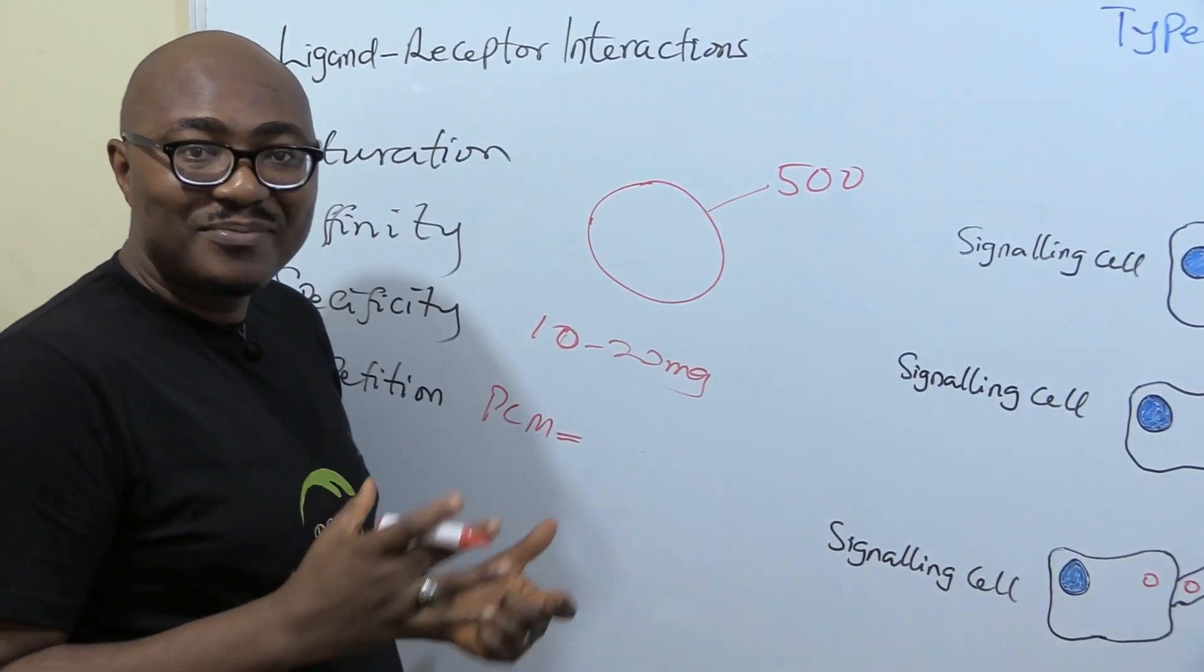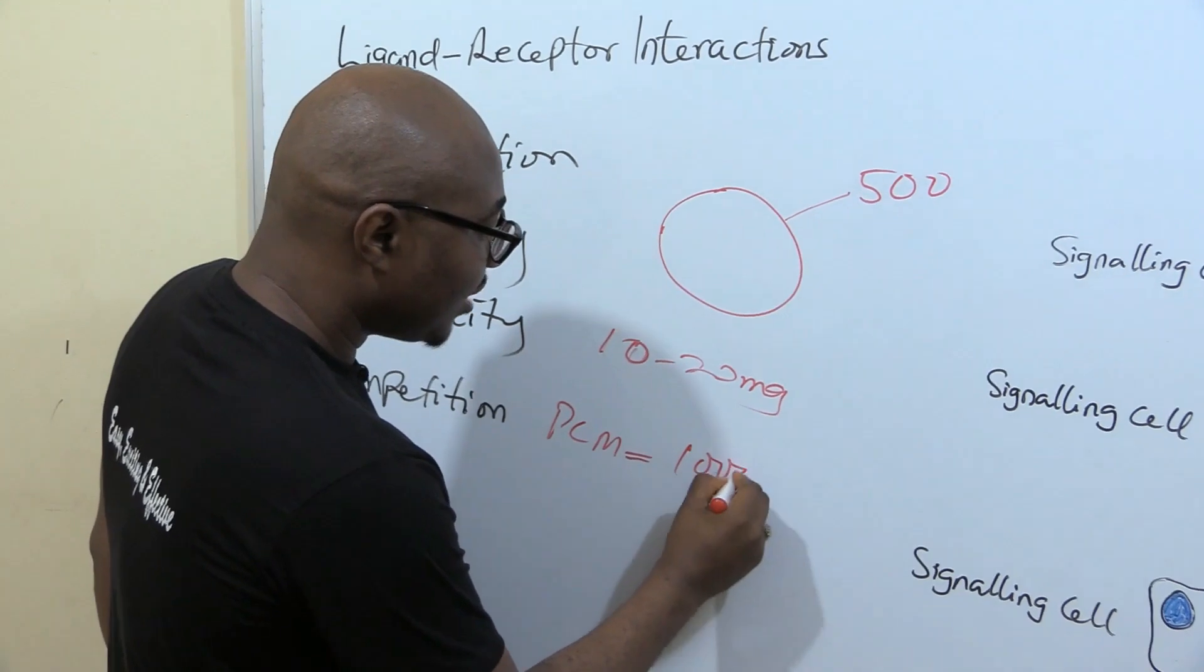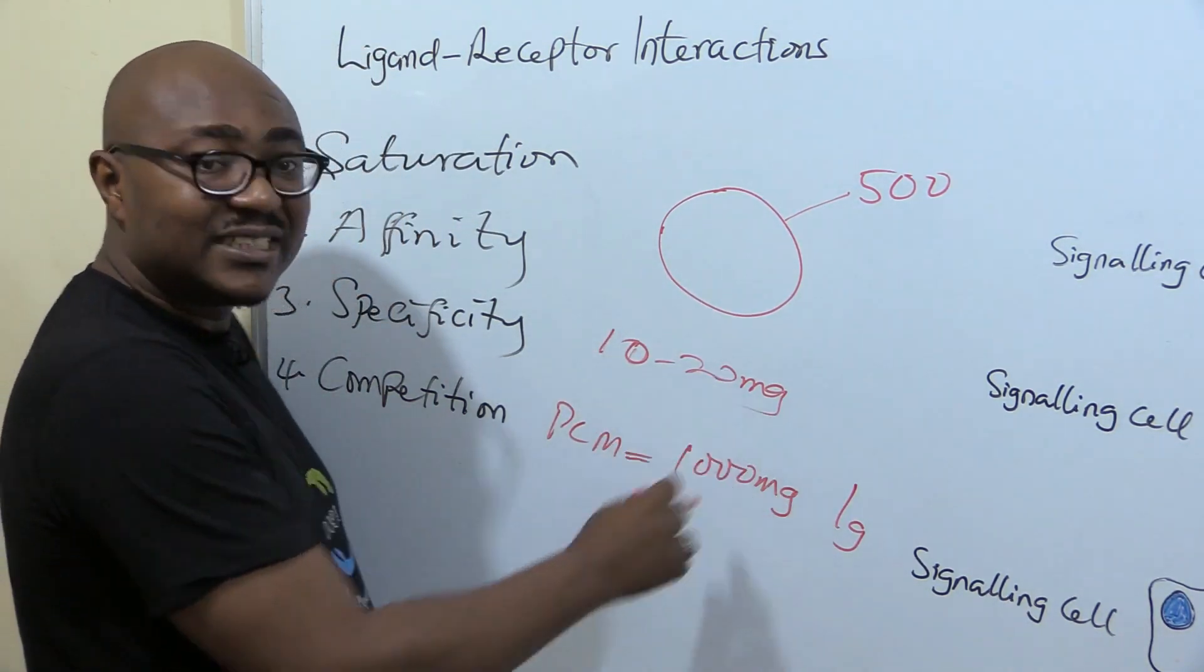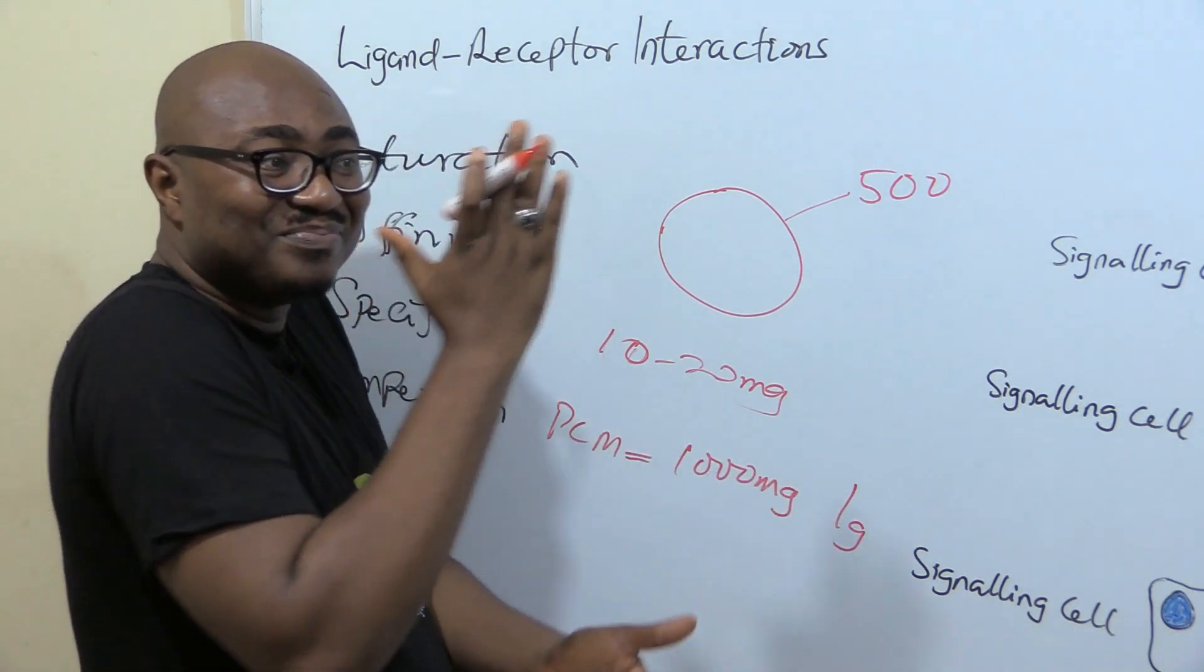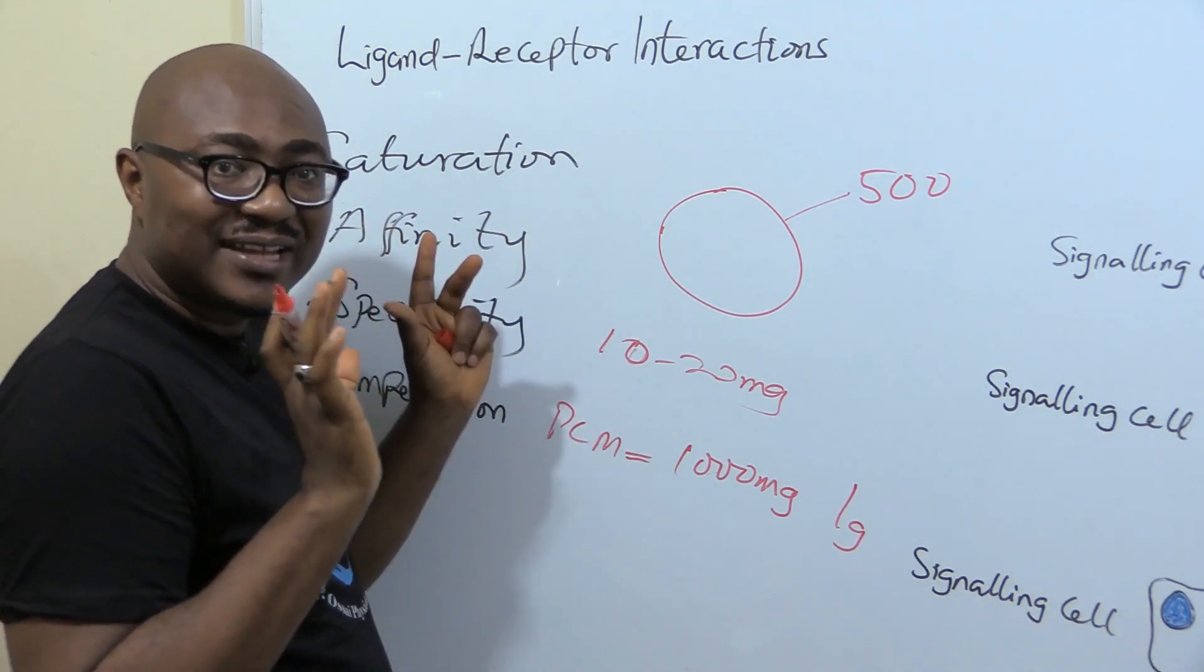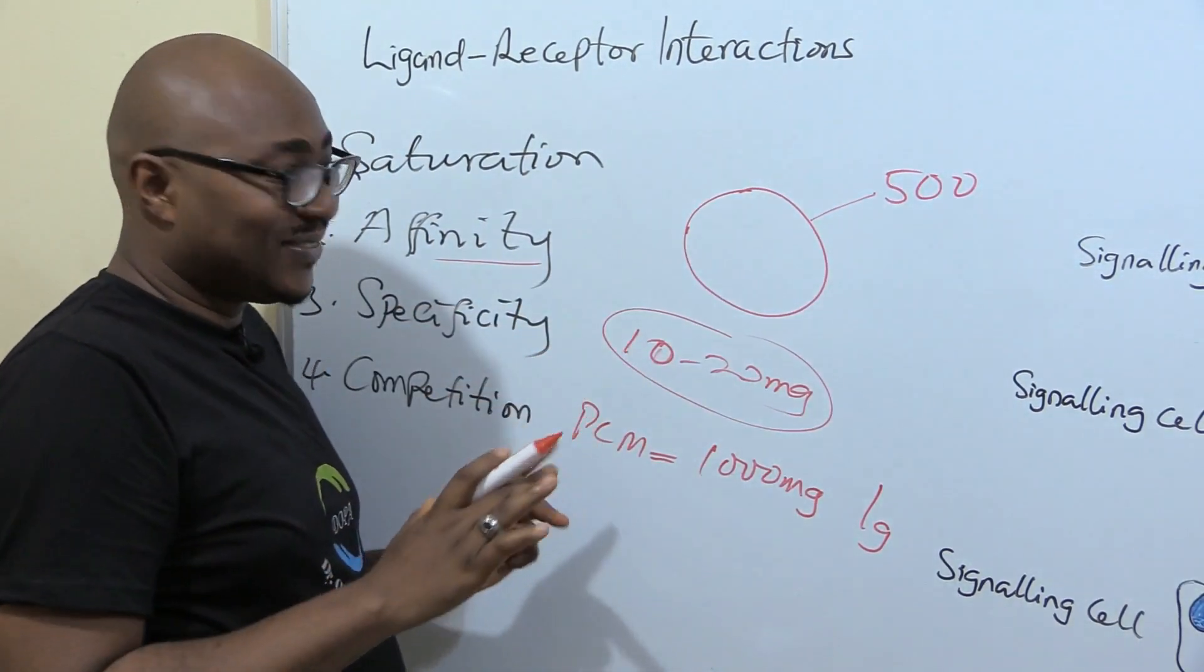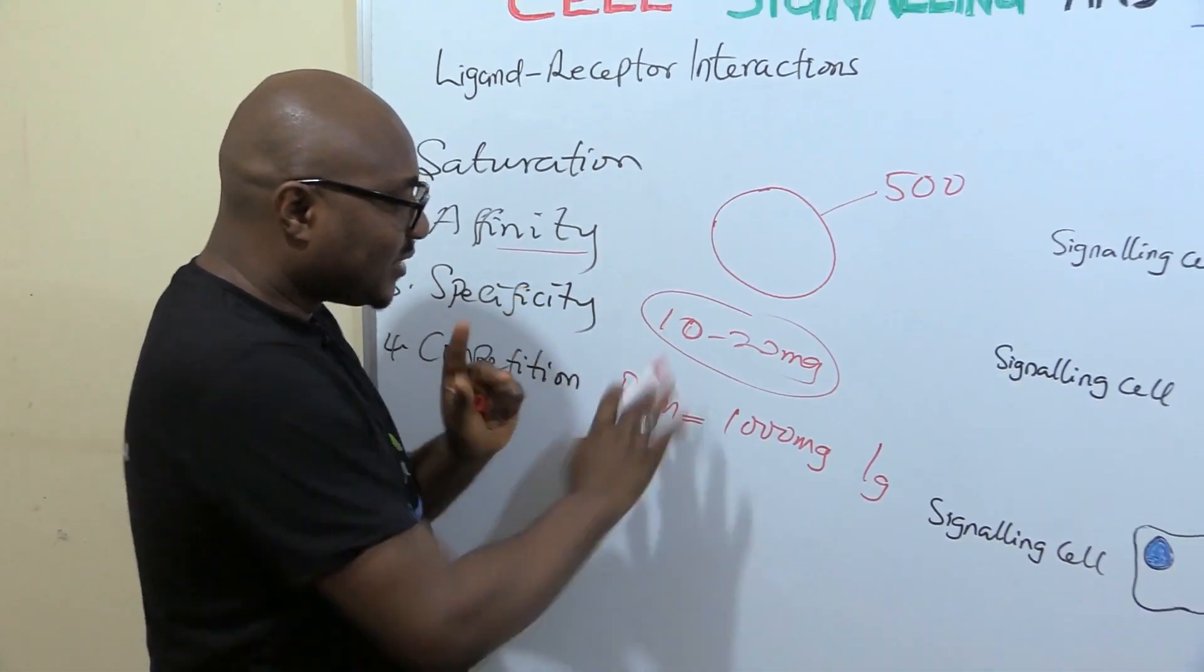This relates to how drugs work. There are some drugs, for example diazepam that you take when you want to sleep. That drug's effective dose is usually 10 to 20 milligrams. But something like paracetamol, for an adult you take two tablets and each of those tablets is 500 milligrams, that's 1000 milligrams which is one gram. You see the vast difference. This drug has more affinity for its receptors.